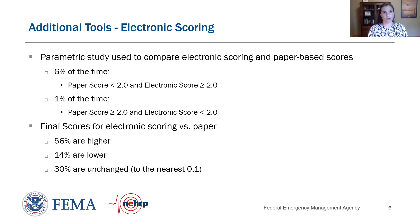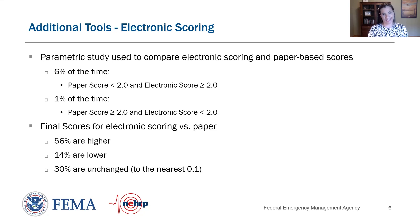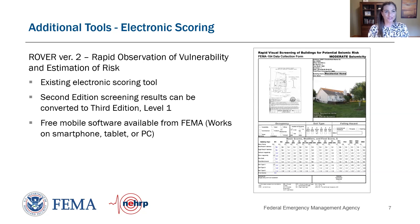Generally, the paper score is a little more conservative and will send more buildings to the further evaluation file. The final scores for electronic scoring were higher 56% of the time, lower 14% of the time, and unchanged 30% of the time. There are tools available to do electronic scoring.